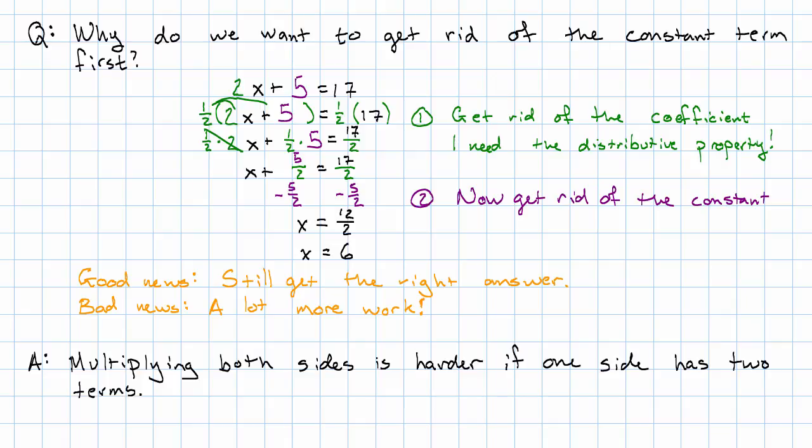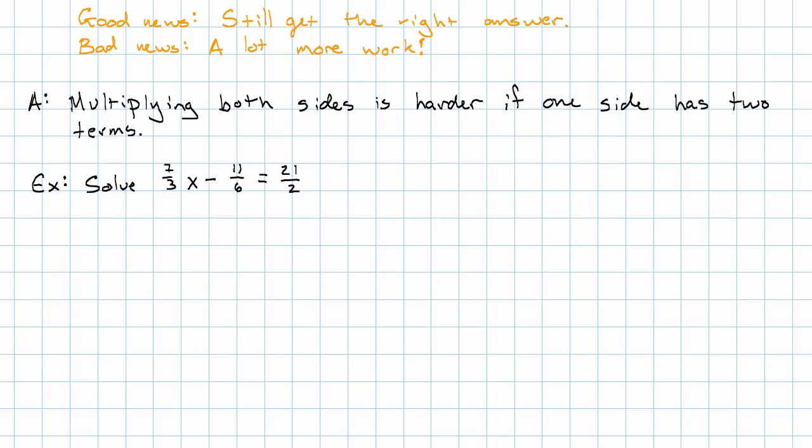Let's take a look at a couple more examples. I'm going to show you an example with some kind of unpleasant numbers. And then I'm going to show you an example where something slightly weird happens. Let's say we wanted to solve this equation: 7 thirds x minus 11 sixths equals 21 halves. Now some math textbooks will tell you to go to a huge amount of effort to make the fractions in this problem go away. I'm not going to tell you to do that. I'm going to tell you these fractions are perfectly good numbers. Use your calculator if you need to. First I'm going to get rid of the constant. I notice I have a negative 11 sixths, so I'm going to add a positive 11 sixths. Over here, negative 11 sixths and positive 11 sixths cancel out.